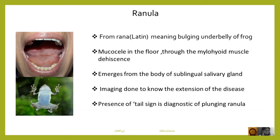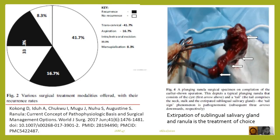Imaging is done only to know the extension of the disease, and the presence of tail sign is diagnostic of plunging ranula. Treatment options include marsupialization, intra or extra oral excision, aspiration, and transcervical dissection.